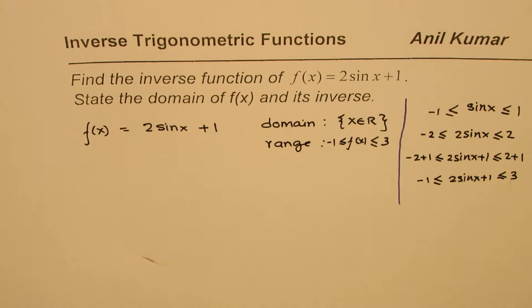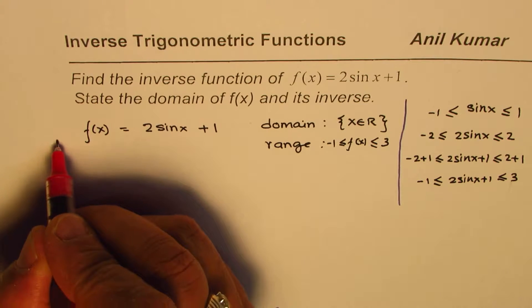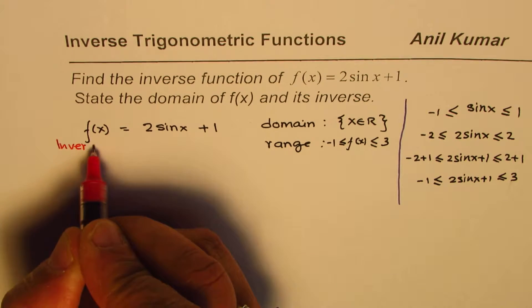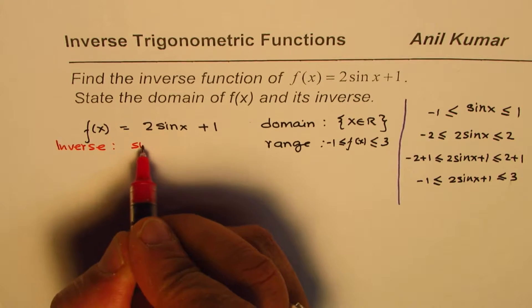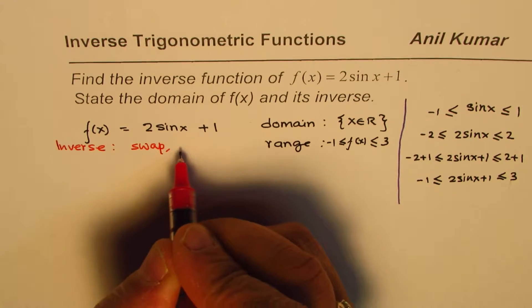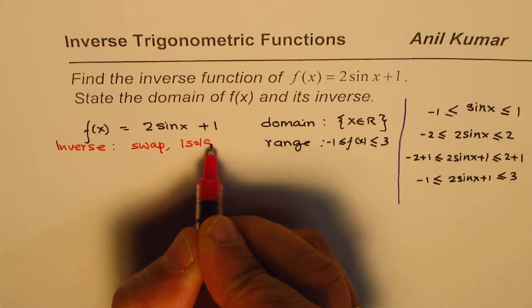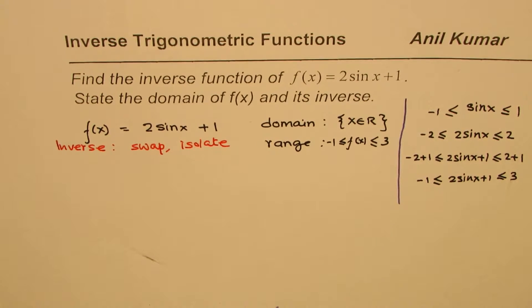Now, what to do to find inverse of the function? To find inverse, we will follow exactly the same steps which we have learned. That is, we'll swap and then isolate. So, these are the two steps to find inverse, swap x and y.